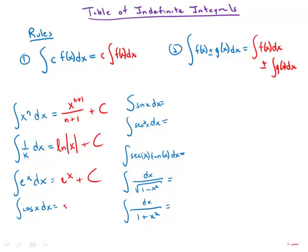Antiderivative of cosine x dx is sine x plus c. The antiderivative of sine x is negative cosine x plus c.